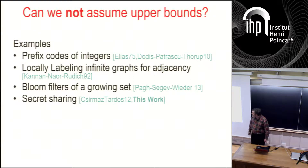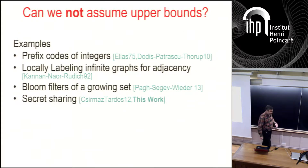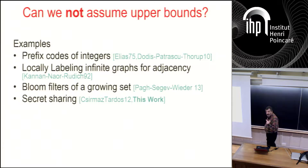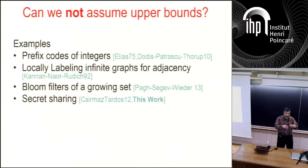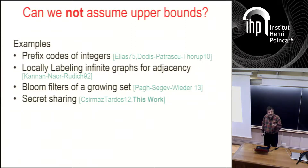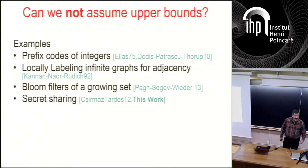Some examples of places where this issue comes up: prefix codes of the integers, where you want to encode all the integers in a prefix-free manner so that no code word is a prefix of another. Perhaps closest in nature to what I'll discuss are Bloom filters of a growing set — you have a set, you don't know how large it's going to be, and you want an approximate representation. If you're aiming for an error of epsilon, you need something like n log(1/epsilon) bits. What happens if you don't have an upper bound n?